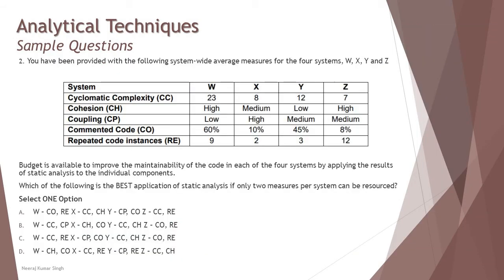Look at the next number, question number two. You have been provided with the following system-wide average measures for four systems which could be anything like W, X, Y, Z, and there's data provided to you from the point of cyclomatic complexity, cohesion, coupling, commented code, repeated code instances. Now we have been provided with these statistics of different systems on these parameters. What we are looking at is, budget is available to improve the maintainability of the code in each of the four systems by applying the result of static analysis to the individual components. Which of the following is the best application of static analysis if only two measures per system can be resourced? That means you are allocated with the budget, but only two things or two measures or two parameters can be considered for any system.